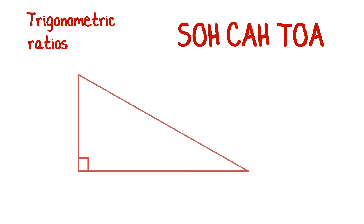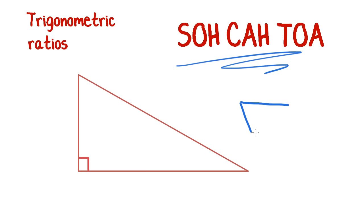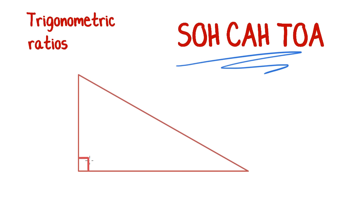The trick is to label your sides correctly. First, we must always have a right angle to be able to apply this. If you have a non-right angle triangle, you can't apply this — that's the first thing to check for. Always opposite your right angle is the longest side, and that longest side we call the hypotenuse.